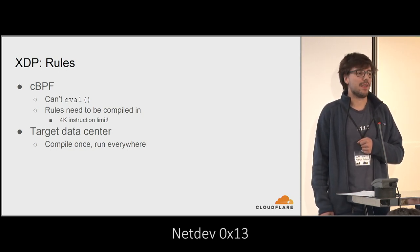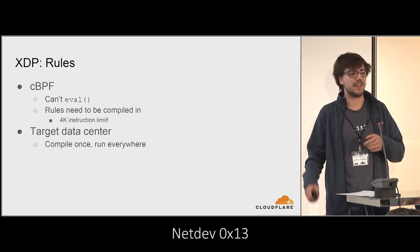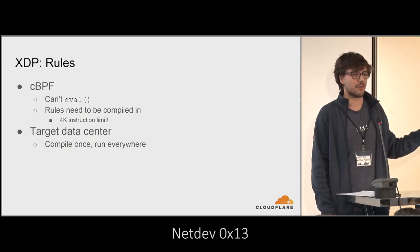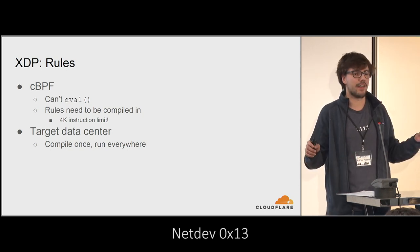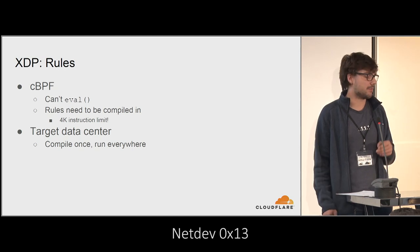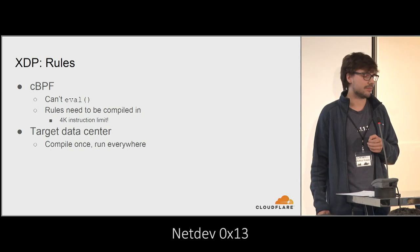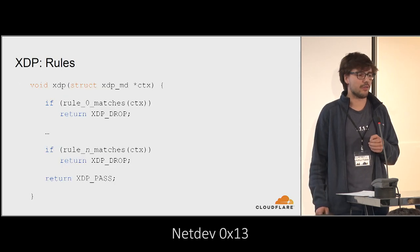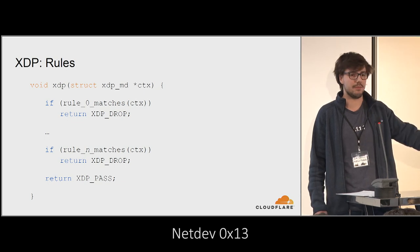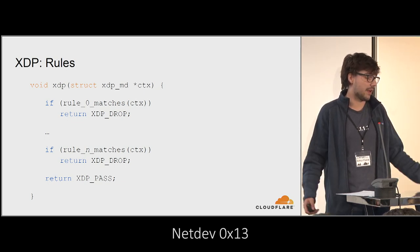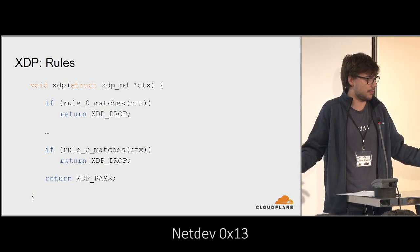We want to compile one ELF, distribute it everywhere via a key-value store, but still be able to selectively enable or disable each rule. Our C template for rendering rules has a main XDP entry point: if the first rule matches, drop the packet; go on to every rule; if no rules match, pass the packet.